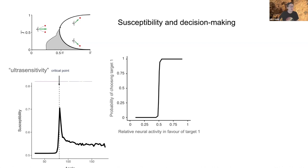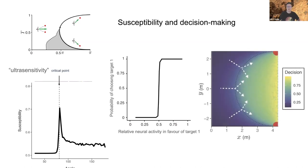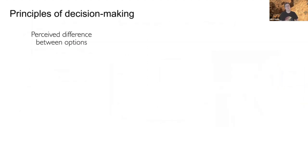This was first discovered in ferromagnetic systems: if the magnet is too cold and particles are all aligned, it takes a strong magnetic force to switch polarization; if it's too hot and disordered, you need a lot of field to align them. But at the critical point the system becomes incredibly sensitive to external fields. In the context of a neuronal system, relative neuronal activity in favor of one option becomes massively amplified near — and only near — this critical point. This is an inevitable property of a geometric phase transition, different from the criticality typically thought of in neuroscience.